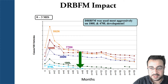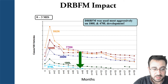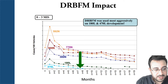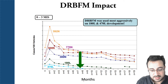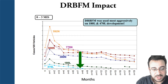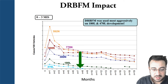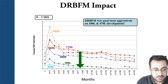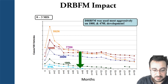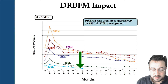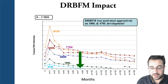To show how DRBFM impacts your organization, there is a graph showing cases per hundred vehicles on the y-axis and months on the x-axis — showing how many vehicles reported problems either before or after production release. The first orange, red, and dark blue lines represent vehicles reported to have problems before applying DRBFM, while the dark green and light blue lines represent the number of vehicles reported having cases after applying DRBFM.